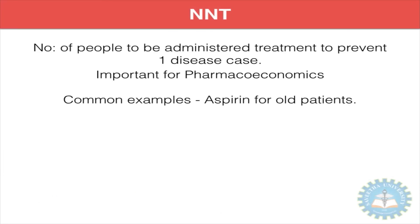The next parameter we use to determine causation is the number needed to treat (NNT). It is the number of people who need to be treated with a preventive drug to prevent one person from developing a disease. It is important in pharmacoeconomics, where we determine the risk-benefit of giving a prophylactic drug, doing a prophylactic x-ray, or doing a regular health checkup. A common example is giving aspirin to patients to avoid cardiovascular disease — to determine whether aspirin would be useful, you would perform an NNT calculation.